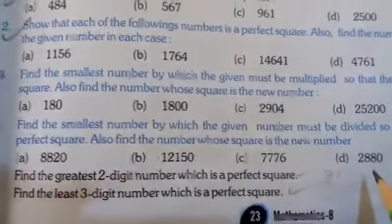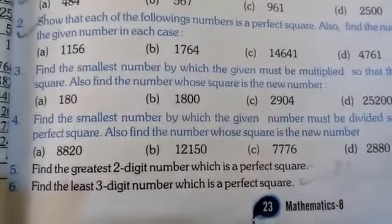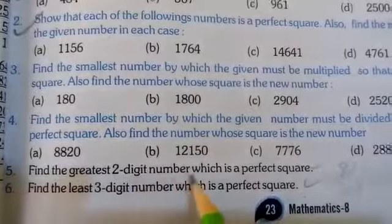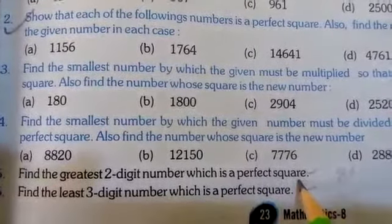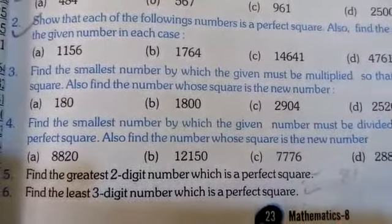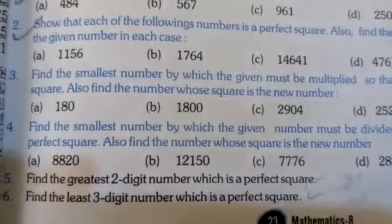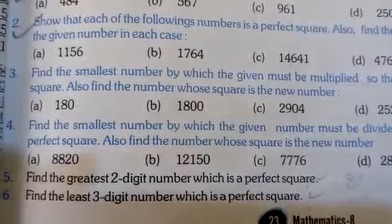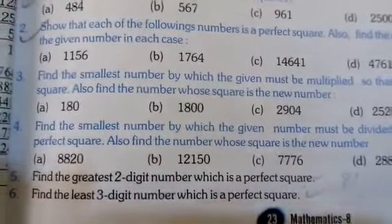Isi tarah se hume B, C, aur D question solve karne hain, bilkul isi tarah se. Now question number 5: find the greatest two-digit number which is a perfect square. Toh hume ek number find karna hai 2-digit ka jo ki sabse greatest hai, sabse bada number hai, aur ek perfect square hai.